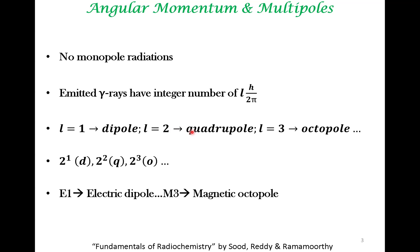There is a notation used for these radiations. When we say E1 radiation, the letter E refers to electric and 1 refers to L equal to 1, making it an electric dipole radiation. When we refer to M3, M refers to magnetic radiation and 3 refers to L equal to 3, which is an octopole — so M3 is a magnetic octopole radiation.